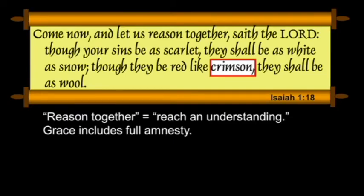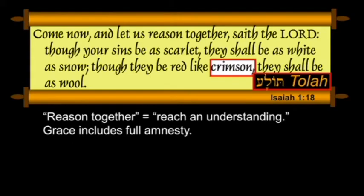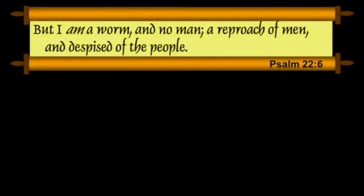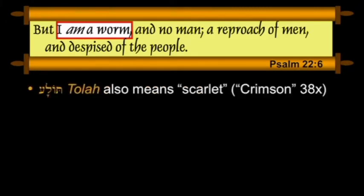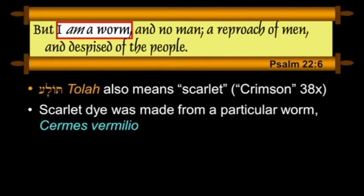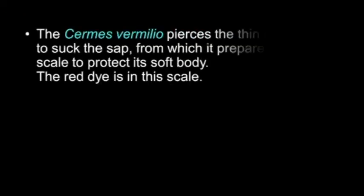This word "crimson" in the Hebrew happens to be the word tola. And tola turns out to be a very provocative allusion that Jesus himself uses of himself. When he hangs on the cross, as recorded in Psalm 22, Jesus apparently says, "But I am a worm and no man, a reproach of men and despised of the people" — using this strange word tola. The word tola in Hebrew can mean scarlet or crimson — it's translated crimson 38 times. But scarlet dye was made from a particular worm, Cermis vermilio.